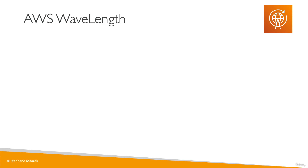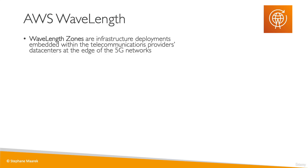Now let's talk about AWS Wavelength. Wavelength Zones are infrastructure deployments embedded within the telecommunications provider data centers at the edge of 5G networks. Whenever you see 5G in your questions, this is most likely going to be Wavelength. The idea is that you're able to deploy some AWS services directly to the edge on the 5G networks.